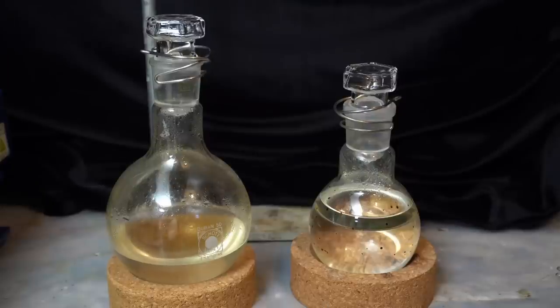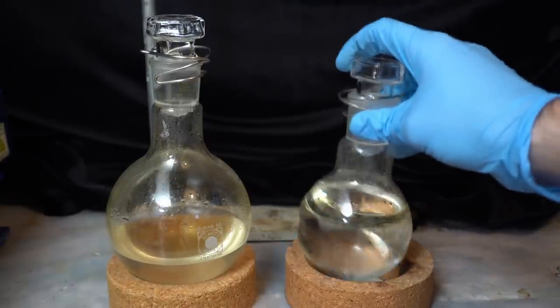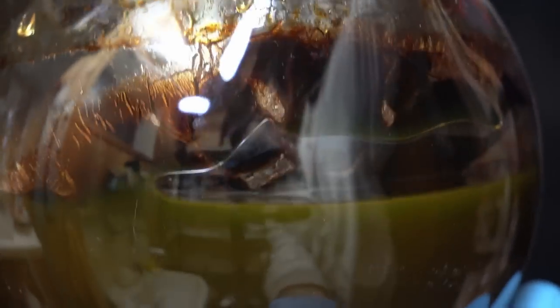After distilling about 400 milliliters I stopped the distillation. The yellow oil floating on the water is our product. In the distilling flask the crude has changed color into this vomit green and there's also some solid stuff in there. It looks really appetizing.